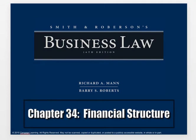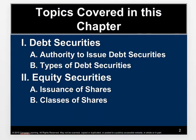We're going to keep moving on — we're getting towards the end of the semester. We're going to cover chapter 34 right now on financial structure. The next one will be chapter 35. I will upload chapter 34 today and chapter 35 tomorrow. Chapter 35 deals with financial structure, and what we're actually going to talk about are debt securities — the authority to issue debt securities, the different types of debt securities — and then we'll also talk about equity securities, the issuance of shares, and the different classes of shares.